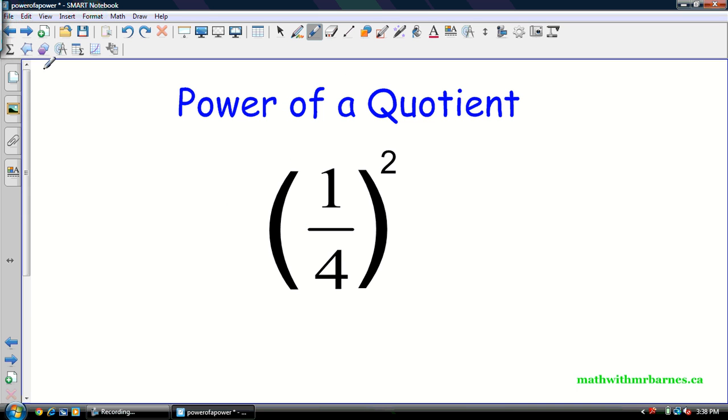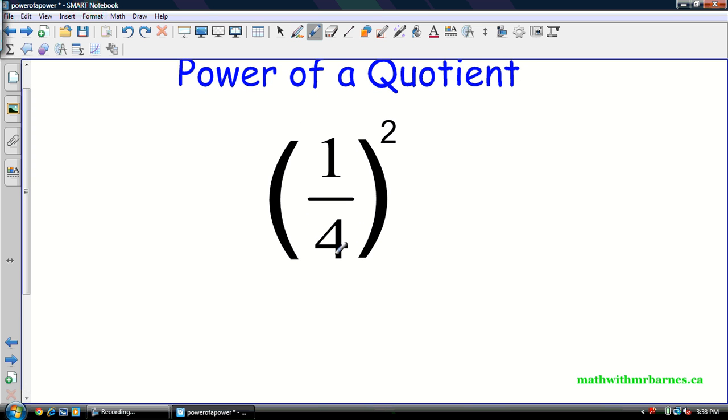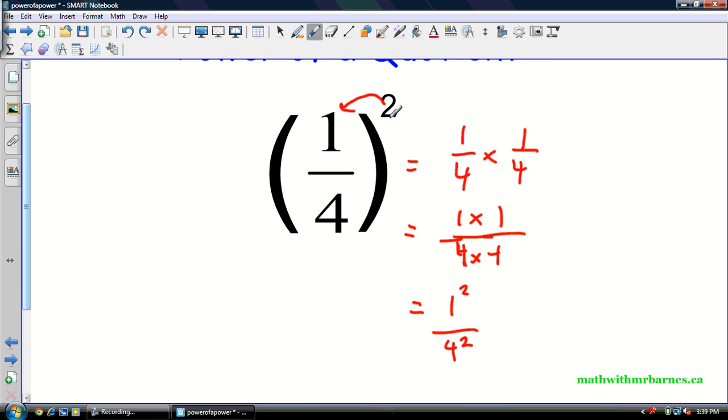Let's have a look at our last rule, power of a quotient. This one's actually fairly useful. So let's dissect what we have here. So our base here really is 1 over 4. We have a base of 1 over 4 or in brackets 1 divided by 4, it's really the same thing. So let's have a look at what this actually means. So we have 1 over 4 times 1 over 4. Now we can rewrite that if we wanted to make it look like this: 1 times 1 all over 4 times 4.